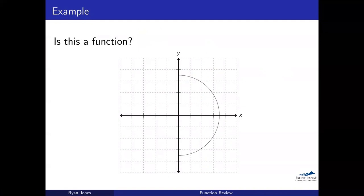If I take the right half of the circle, this doesn't work. If I pick x equals 2 and ask where my y values are, there are two of them. I can't say each x corresponds to exactly one y value. So the right half of a circle is not a function.